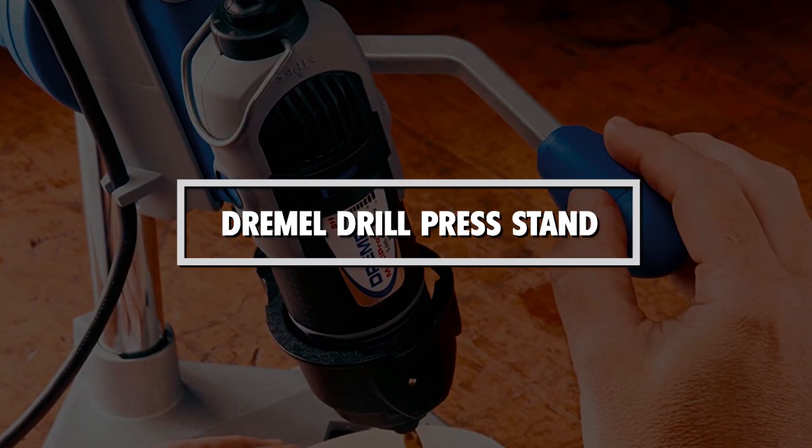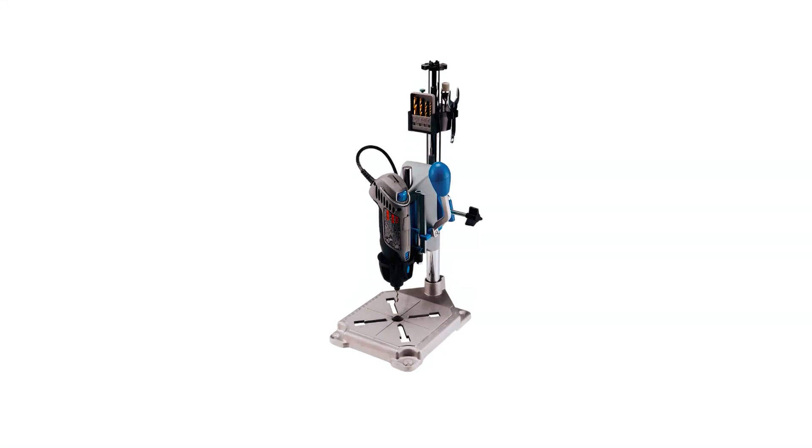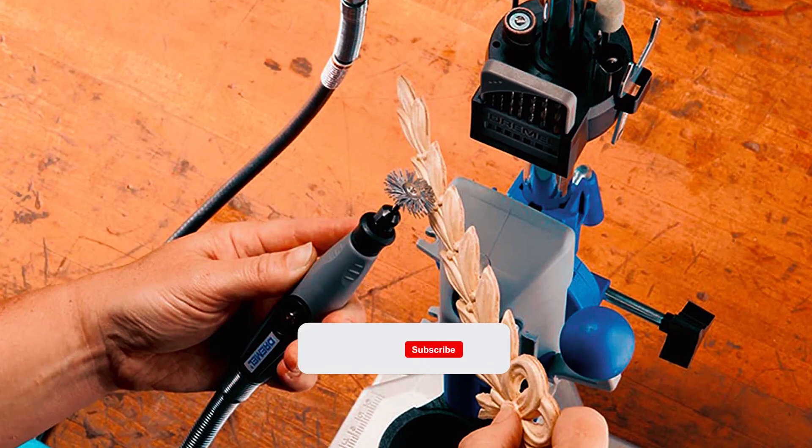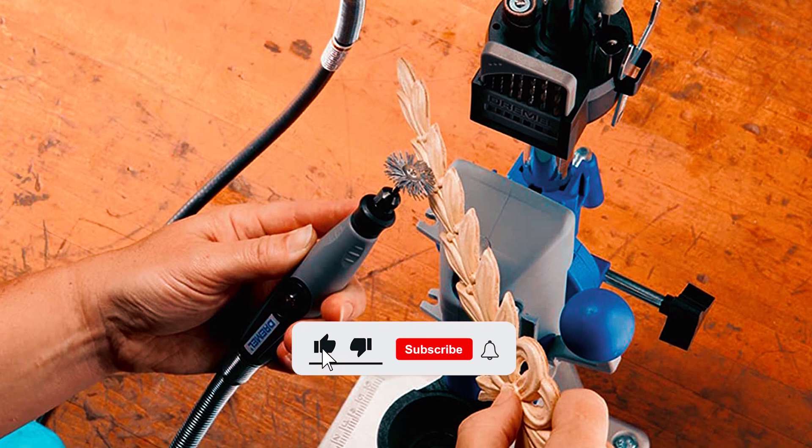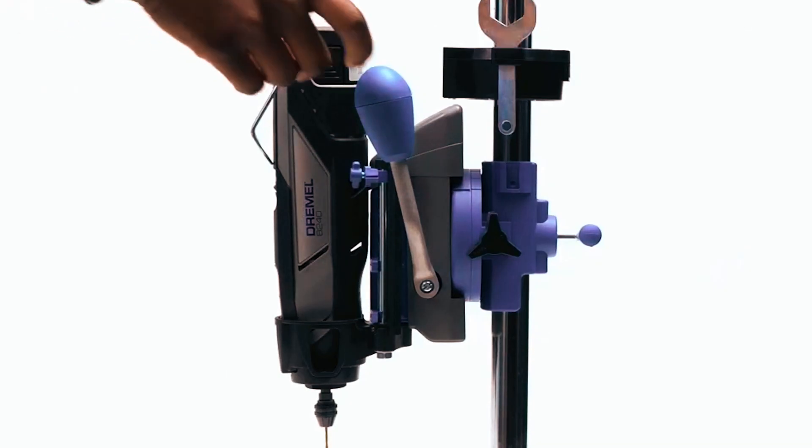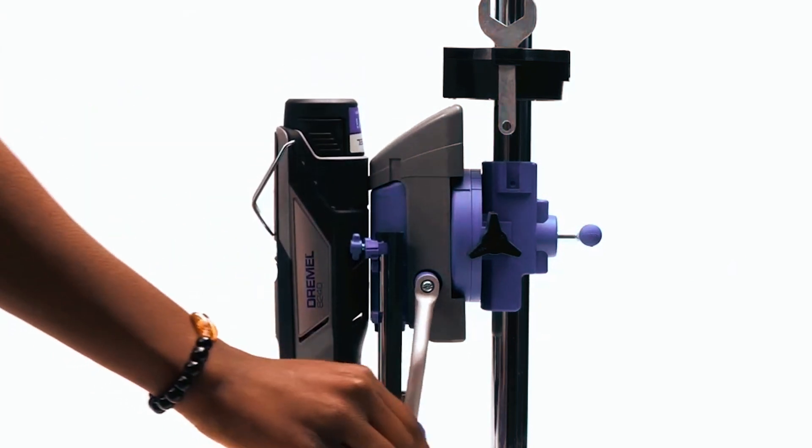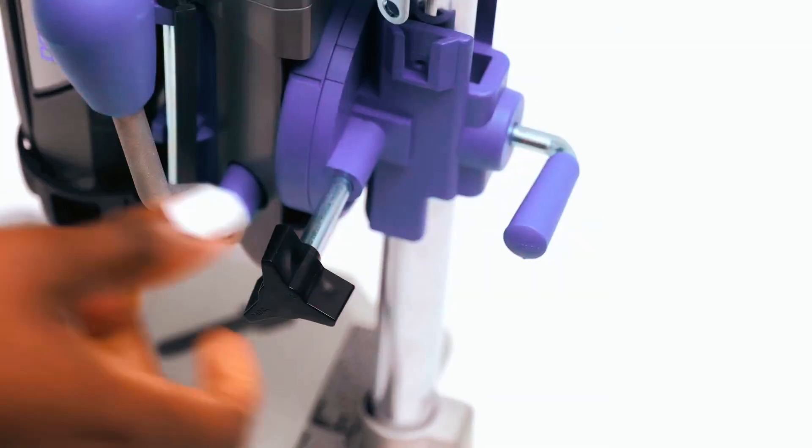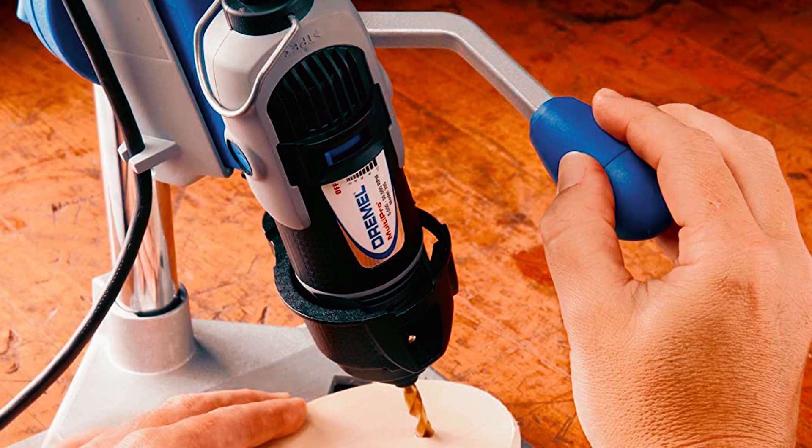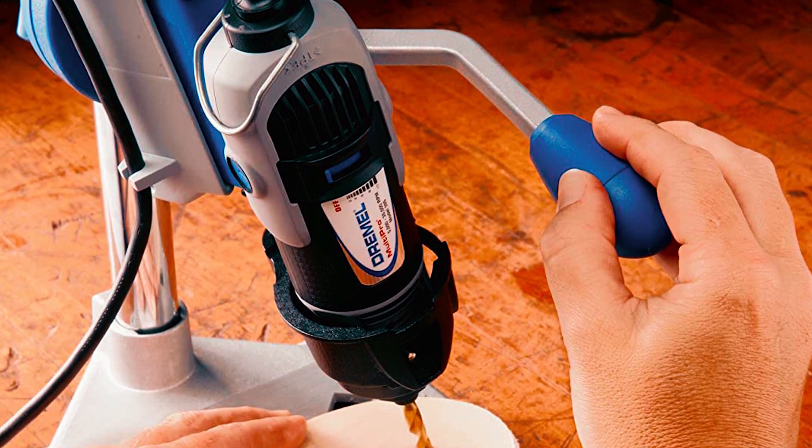Dremel Drill Press Stand. The Dremel Drill Press Stand is designed to work with a variety of Dremel rotary tool models. It offers a range of features that make it an ideal choice for drilling perpendicular and angled holes. With its ability to drill perpendicular and angled holes in 15-degree increments, up to 90 degrees horizontal, this drill press stand is a great tool for precise drilling and working on a variety of projects.